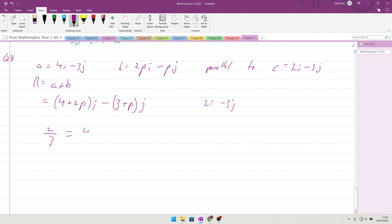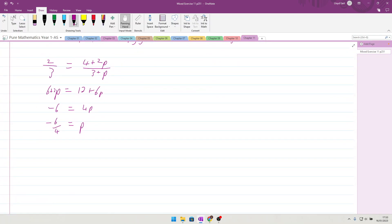So we have the ratio between the 2 and the 3 is equal to the ratio of 4 plus 2p over 3 plus p. Multiply that out to give us 6 plus 2p equals 12 plus 4p. Move 2p across, we end up with 4p equals minus 6, and so p is equal to minus 6 over 4, which is minus 3 over 2.